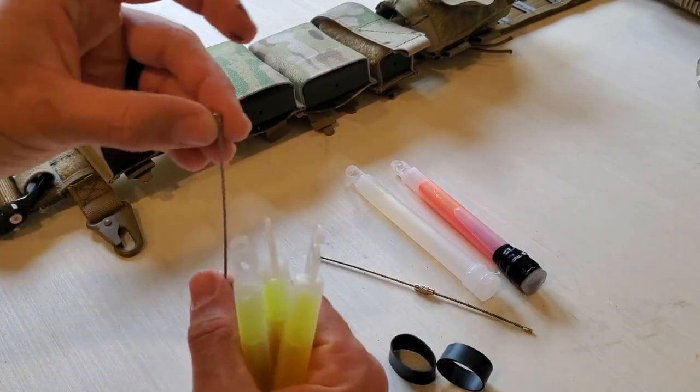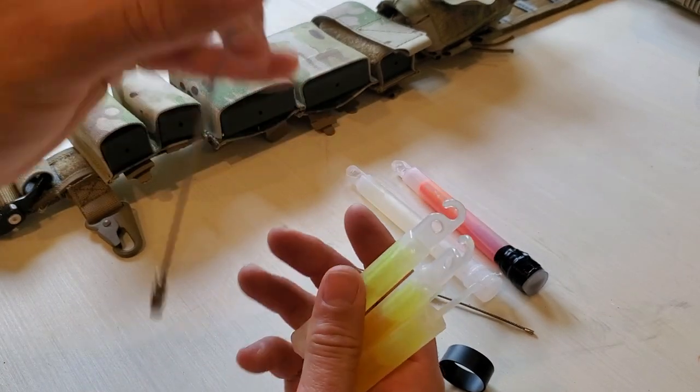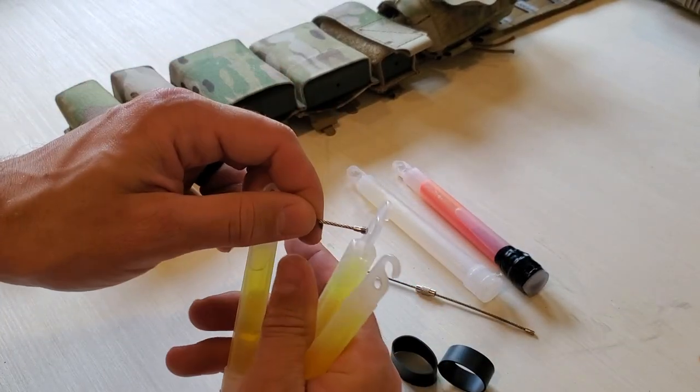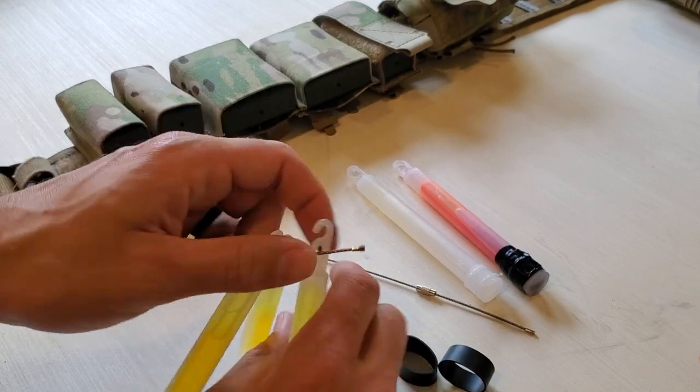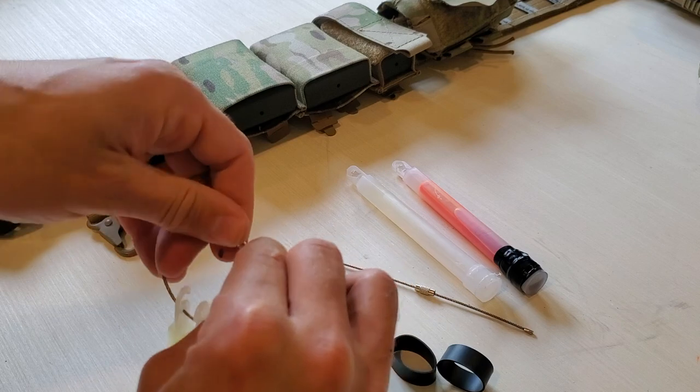And to use the Chem Keeper, you're going to basically go ahead and thread this through. Make sure you use the threaded side and feed it through your hole. Once you've done that, go ahead and screw it down and secure itself.